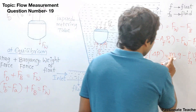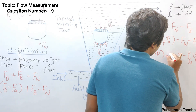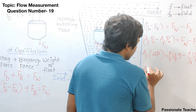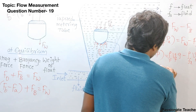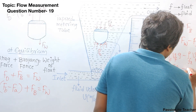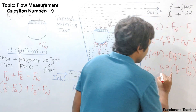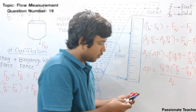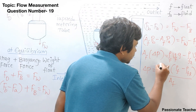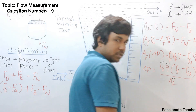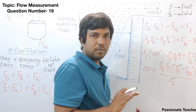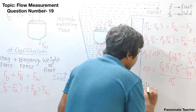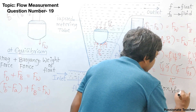The mass of the float can be written as density of the float times volume of the float. Rearranging, the differential pressure delta P equals Vf times g times (rho_float minus rho_fluid) divided by the area of the float Af. Here volume of the float is fixed, gravitational force is fixed, area of the float is fixed, density of the float is fixed, and density of the fluid is fixed — so delta P is constant.